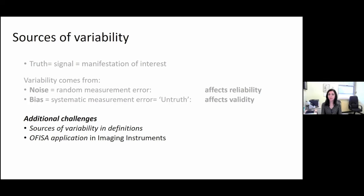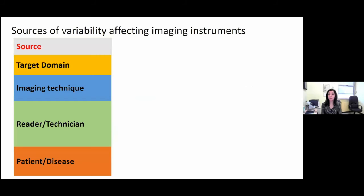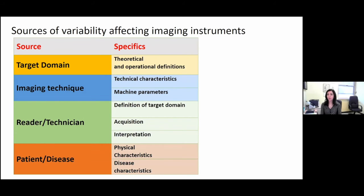To understand the sources of variability, we must first identify them. We have defined at least four sources of variability that can affect imaging outcome measurement instruments: one is related to the target domain, the second to the imaging technique chosen, the third to the reader or observer or technician applying the technique, and the fourth to the patients and their disease. Specific sources of variability include the theoretical operational definition, machine characteristics, acquisition and interpretation, and the physical characteristics of patients.